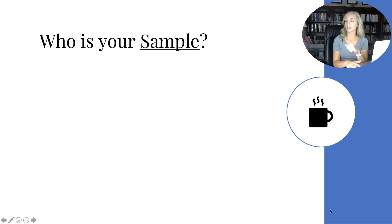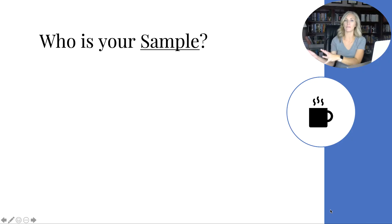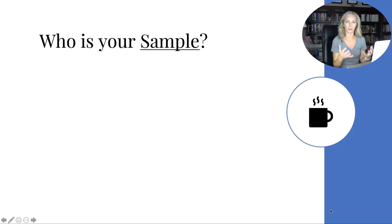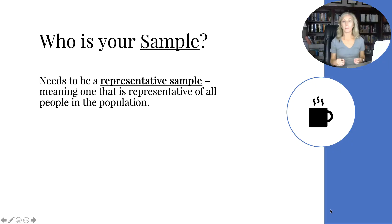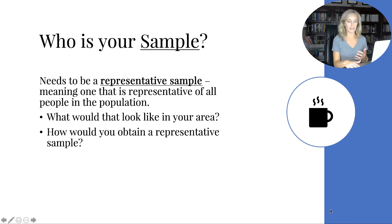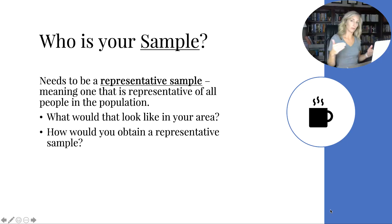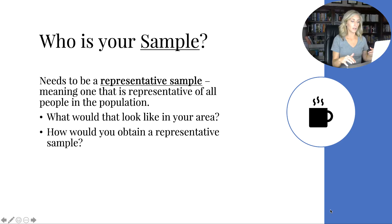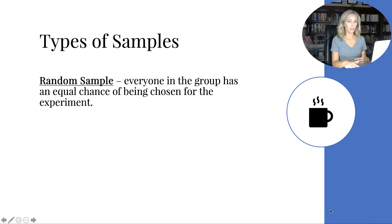Instead, you get a sample — just like when you go to buy a bottle of perfume or cologne, you get little samples rather than buying all the bottles. In research, your sample has to represent the population it came from. So you need a representative sample, meaning one that is representative of all people in that population, not just some. In your area, that might mean getting teachers from social studies, math, English, science, art, and music — all types.